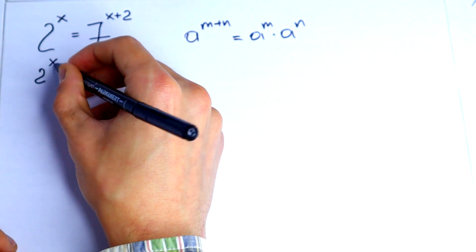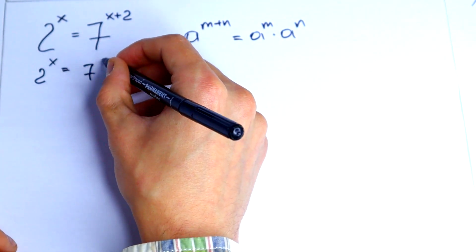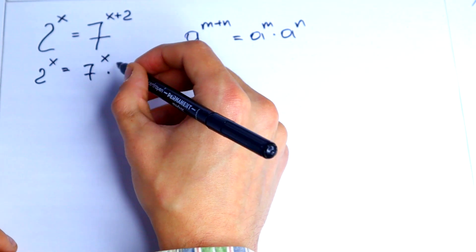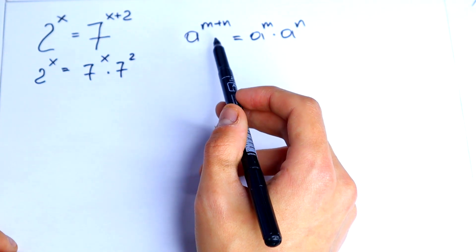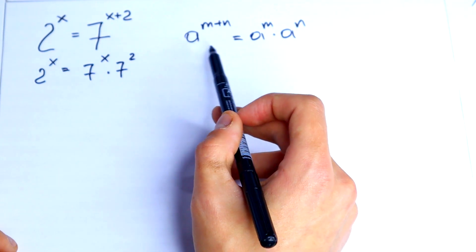2 to the power x is equal to 7 to the power x times 7 square. Just use the exponential law multiplication rule.